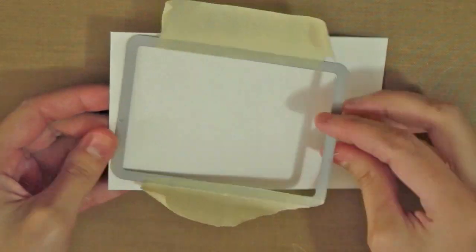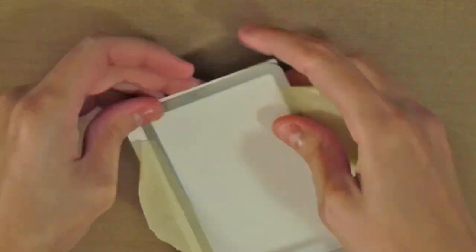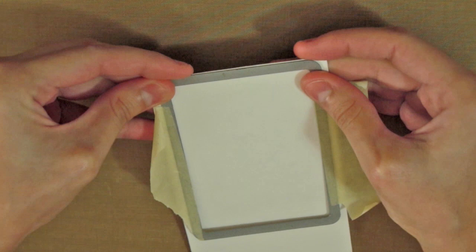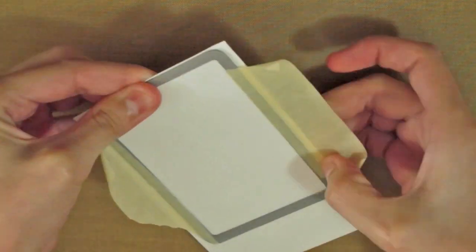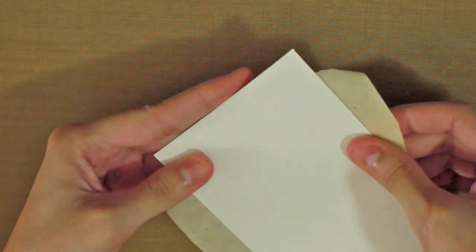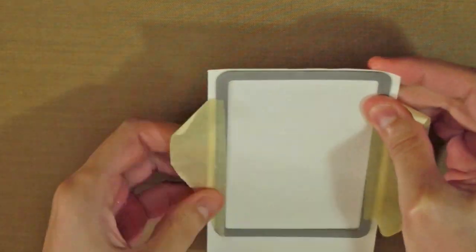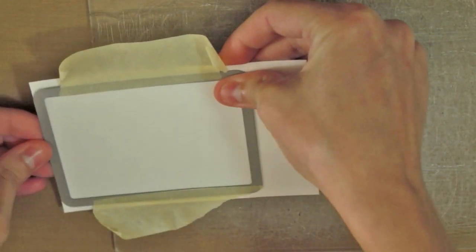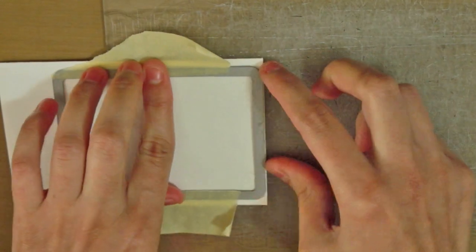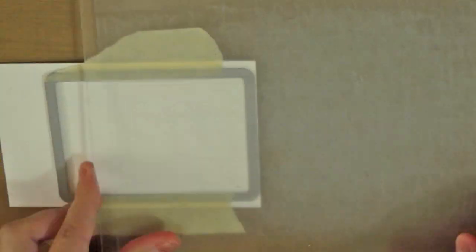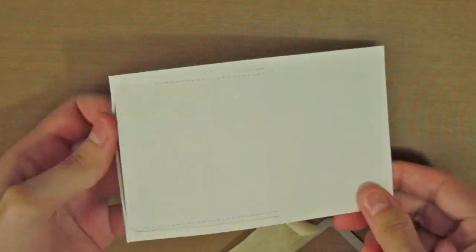I will stretch the stitched rectangle from the stitched journaling card die set from Lomfon. First, I will die cut a piece of cardstock, but will not die cut the whole rectangle at once. I will only die cut about three quarters of it. For this, I will leave one extreme of it hanging from the cutting plate.